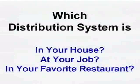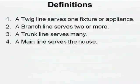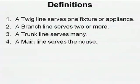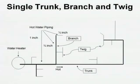Which distribution system is in your house? Let me define some terms first. A twig is a piece of pipe that serves one fixture, either hot or cold. A branch serves two or more, a trunk serves a bunch, the main serves the building. I'm trying to get 'twig' into the lexicon because everyone understands what a twig is. Does anybody have a hot water distribution system with a water heater at one end, a main trunk line going down the middle of the house, and branches and twigs of various lengths off of that?